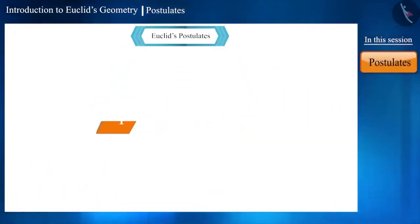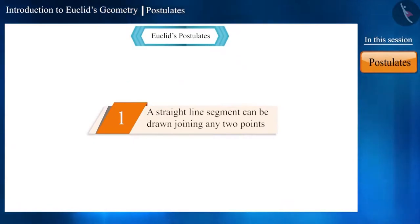So let's start with the first postulate: A straight line segment can be drawn joining any two points.